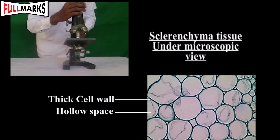Sclerenchyma tissues: These cells show thick corners and thick cell walls. They do not have any protoplasm. They show lignified walls and can be divided into two types: sclerenchyma fibers and sclerites. These cells are dead.